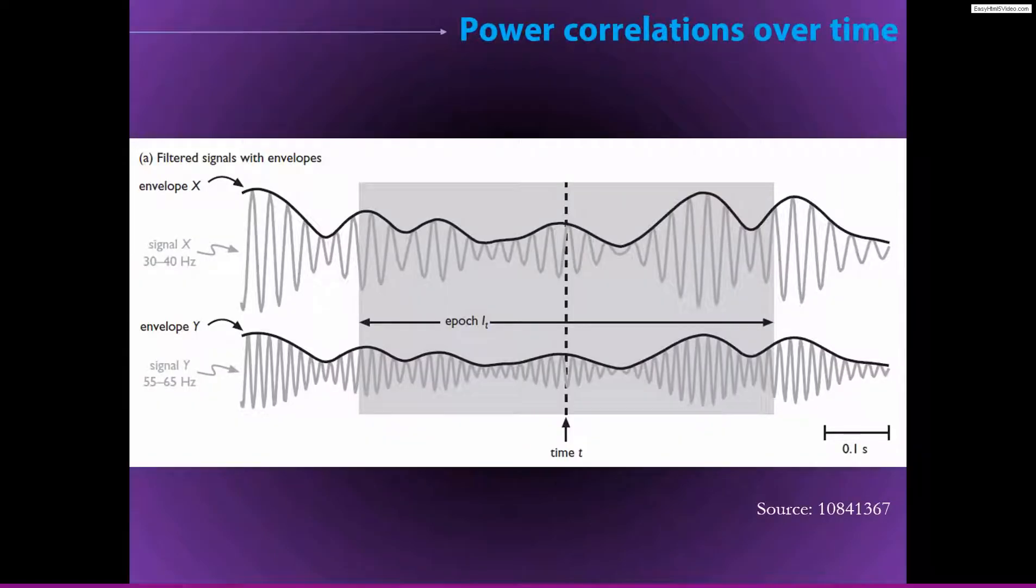So here is one method, power correlations over time. It's very simple. Here you have your bandpass filtered data, an oscillatory signal. And here's the power time series, or sometimes called the analytic envelope, that you see riding on top. So here's from electrode X, and this would be from electrode Y. And then you take these black signals, these power time courses, and then you just correlate them over time.